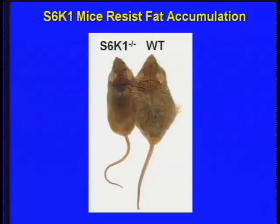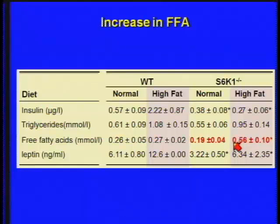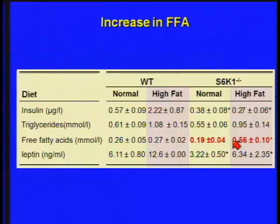Given that instead of storing fat they're burning fat, we looked at free fatty acids in the blood. When we place these animals on a high-fat diet, free fatty acids go up about threefold. Despite the fact that these animals are lean, we know that an increase in free fatty acids in the etiology of insulin signaling leads to insulin resistance. So we reasoned that even though these animals were resistant to a high-fat diet, they would be insulin resistant.